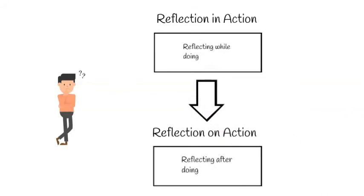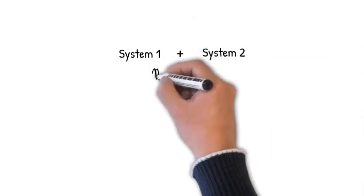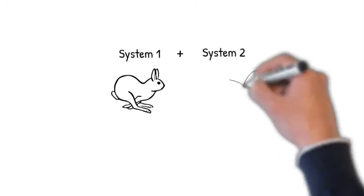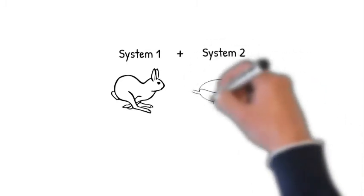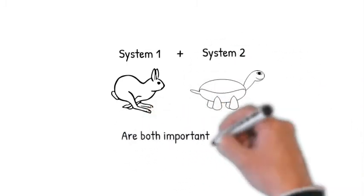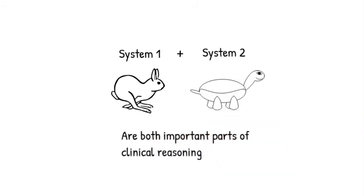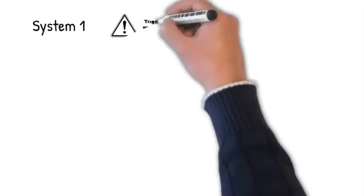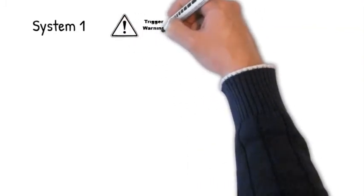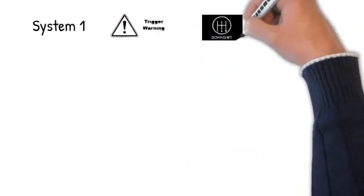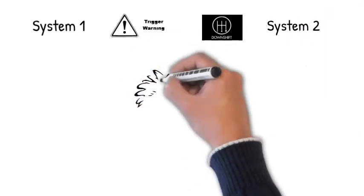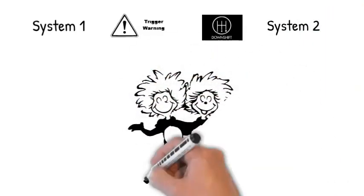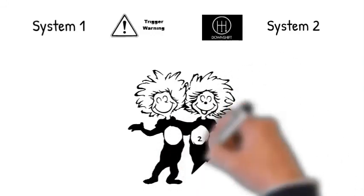In summary, systems one and two thinking are both very useful in driving our clinical reasoning to quickly recognize patterns and also to remember to slow down, notice and check biases before we get off course. Experts typically spend more time in system one, but when they notice warning signs, they shift to system two seamlessly. We are all susceptible to bias and a systematic approach to checking our biases will undoubtedly help us shift back and forth between systems one and two effectively to allow for improved clinical reasoning.